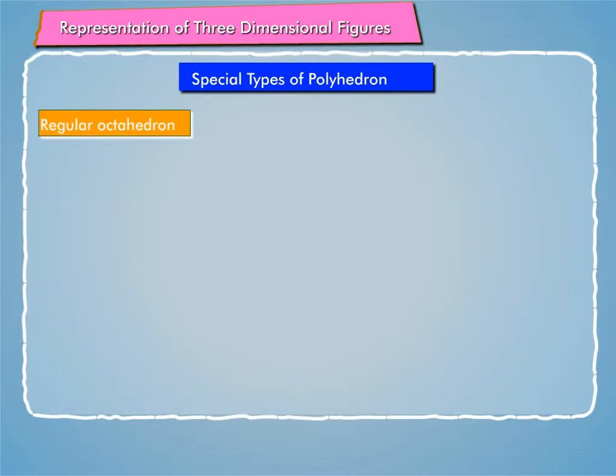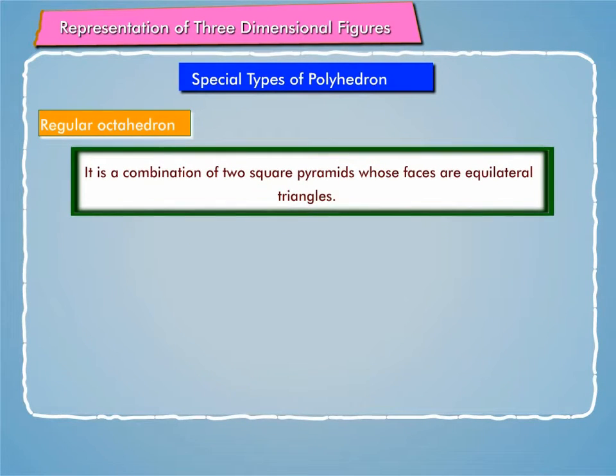Regular octahedron: It is a combination of two square pyramids whose faces are equilateral triangles. A regular octahedron has six vertices A, B, C, D, E and F.